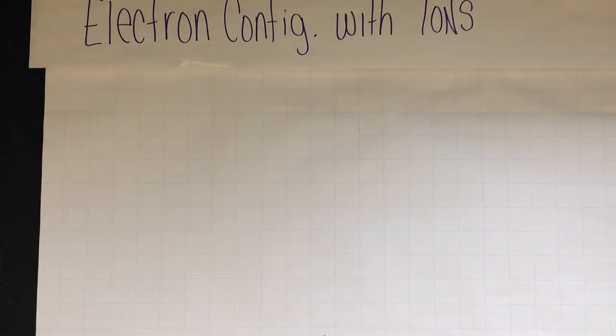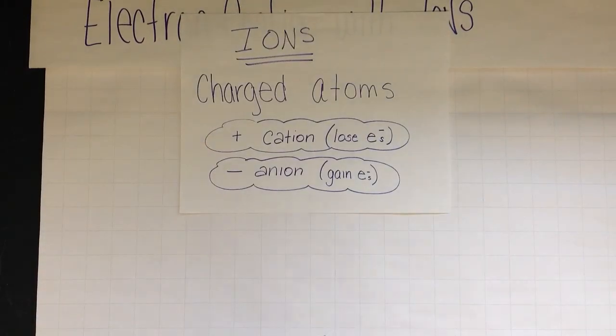This video is about electron configurations with ions. How do we write electron configurations when our atom is no longer neutral and now is charged? Let's first start by reviewing what ions are.